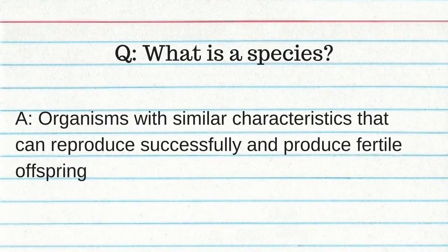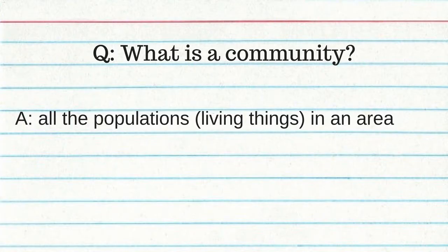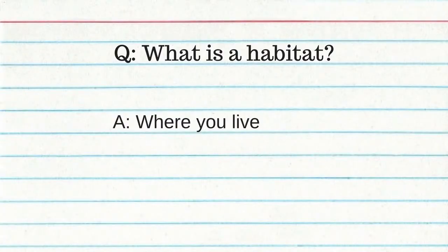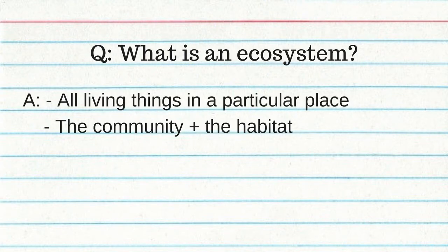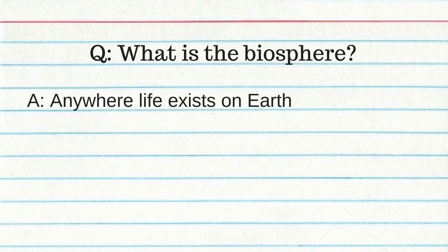What is a species? Organisms with similar characteristics that can reproduce successfully and produce fertile offspring. Population is all members of one species in an area. Community is all the populations — all living things — in an area. Habitat is where you live. An ecosystem is all living things in a particular place — the community combined with the habitat. A biome is interacting ecosystems in a large geographic area. The biosphere is anywhere life exists on Earth.